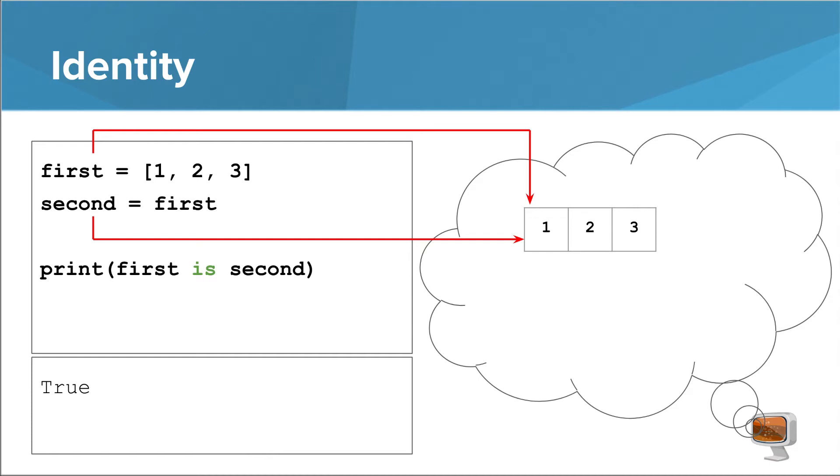You can use it instead of equals equals in order to ask if two things literally are the same thing. In this case, since both variables refer to exactly the same list, the Boolean expression returns true.